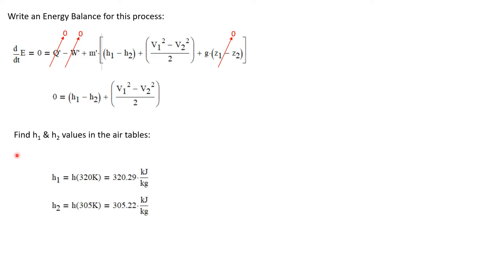So because it's not a constant enthalpy, I'm going to have to find values for H1 and H2. And I can do that in the air tables. Because air is an ideal gas, its enthalpy values are a function only of temperature.